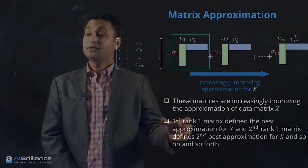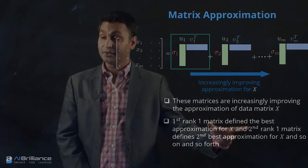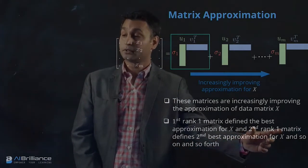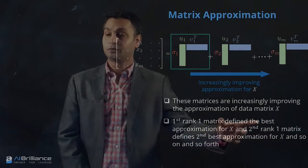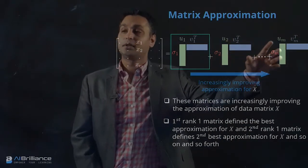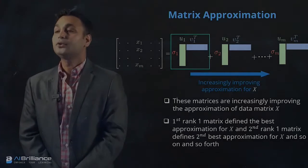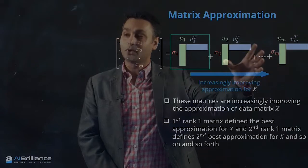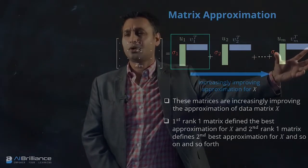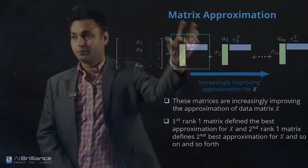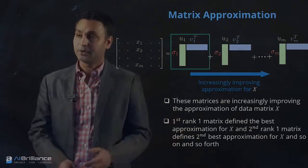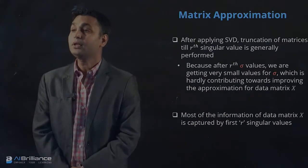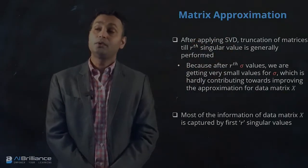The first rank-one matrix defines the best approximation of X, the second rank-one matrix defines the second best approximation, and so on — the M-th gives the M-th best approximation. This also gives us a basis to truncate: the later terms may contribute very little to the overall best approximation of X, and they may also be there because of noise in the data set.